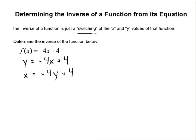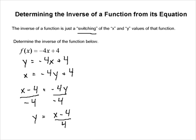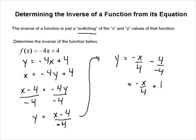Now we need to solve for y. We subtract 4 from both sides to get x minus 4 equals -4y, then divide both sides by -4. That gives us y = (x - 4) / -4, which simplifies to y = -x/4 + 1.